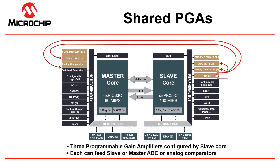There are a few exceptions to the concept of dedicated peripherals associated with each core. For example, the programmable gain amplifiers are associated with the slave core, but their output signals can be configured to be inputs of the analog comparators and A-to-Ds of either the master or the slave core, enabling sharing of the PGAs.